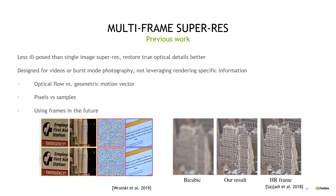In graphics we can take an accurate point sample of the scene function, and there's more information available in samples — we can have HDR values, exposure, sub-pixel offset, and even depth. Also, some previous multi-frame super-res approaches used both past and future frames to reconstruct a high-resolution current frame, which is something we cannot afford in real-time rendering.